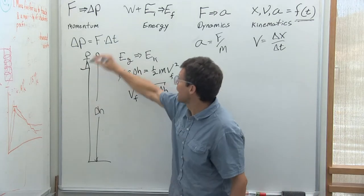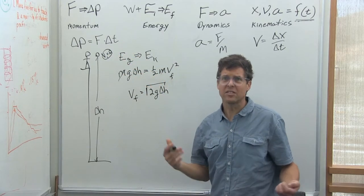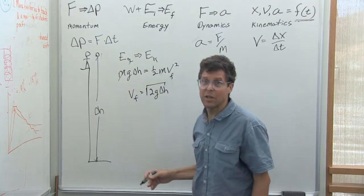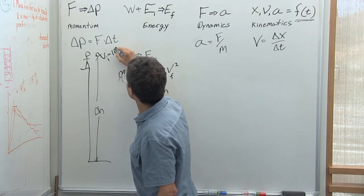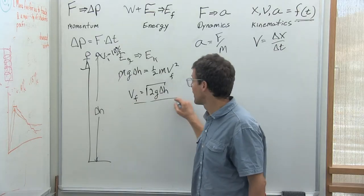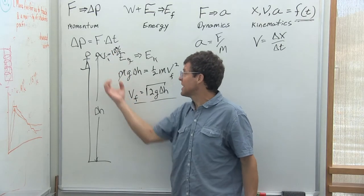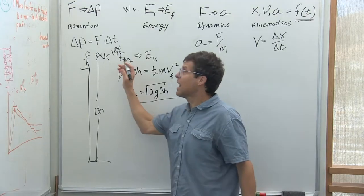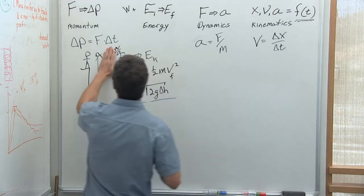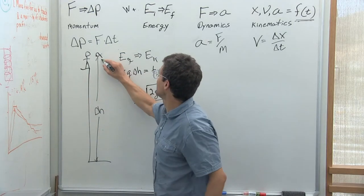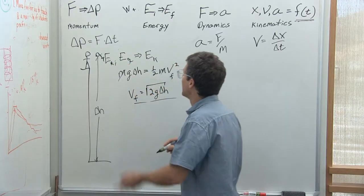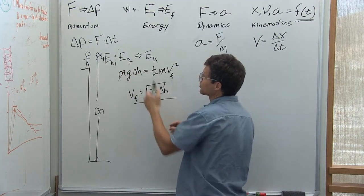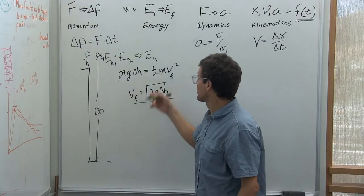This assumes starting from rest with V_initial = 0. What if it's not at rest — for instance, if we throw it downward at 10 meters per second? We can't just add that 10 m/s onto the final answer because we don't conserve velocity, we conserve energy. That initial velocity enters the energy balance as kinetic energy. So the final kinetic energy equals the initial kinetic energy plus the additional potential energy converted to kinetic energy.